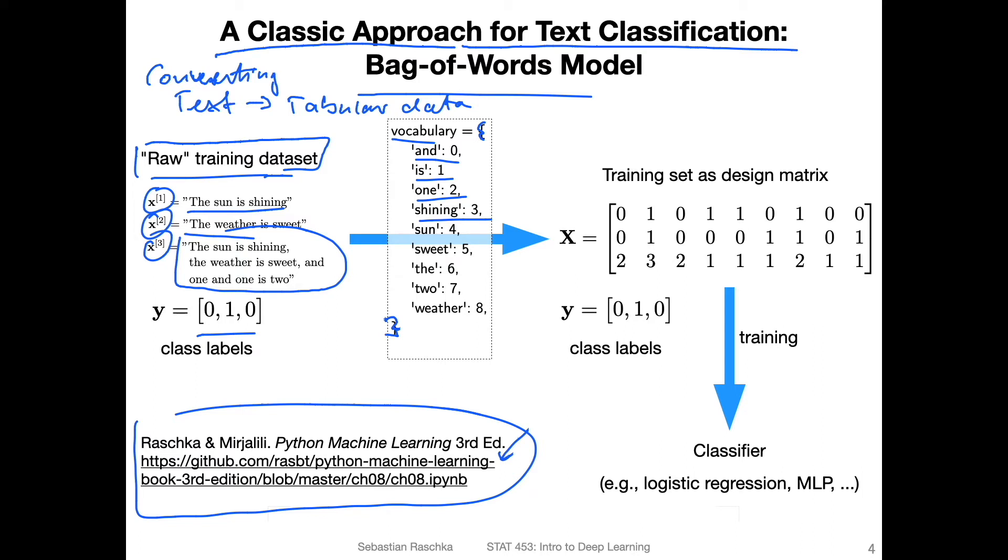And then what you do is you convert the raw text into a design matrix. So this is our regular design matrix in machine learning where we have n training examples and m features. And notice now the m features here. That's actually the length of our vocabulary. So in this case, here, the vocabulary consists of one up to nine, we have nine. Well, let's use a different color here. And m is nine, because we have m or nine unique words. And we have these index positions zero, one, two, three, four, five, six, seven, eight. And this is also corresponding to these index positions in this design matrix.